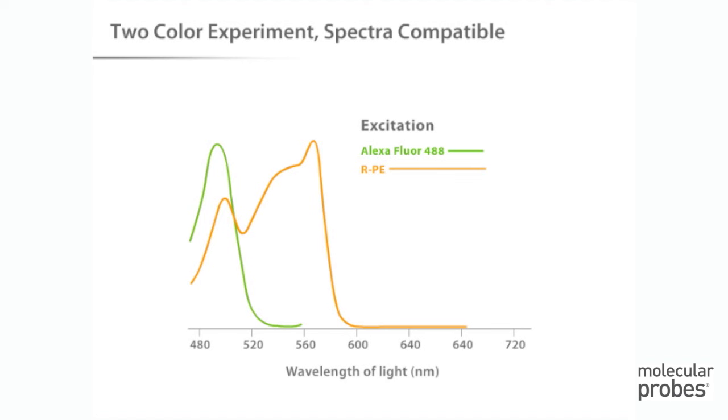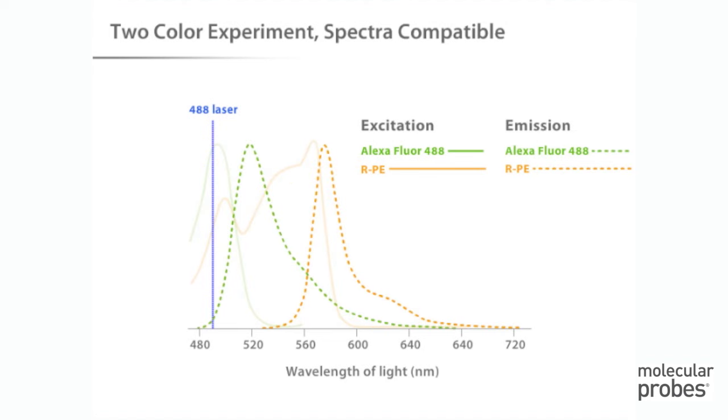What if we want to do a two-color experiment? We need to look at the spectra of the two fluorophores to see if they are compatible. Alexa Fluor 488 and Phycoerythrin, or R-PE, are commonly used together. For these two fluorophores, 488 nanometer light is an efficient excitation source. When excited with 488 nanometer light, you can see that the emission peaks for these two dyes are far enough apart so that discrete emission data can be collected.